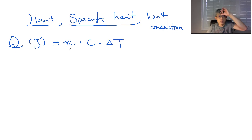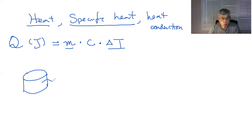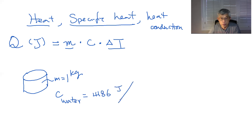So what it says is if I know the mass, I know the temperature increment, and I know the specific heat, then I can calculate how much heat is required to increase that amount of temperature for that mass. So let's say if I have some water here, and the mass m is equal to 1 kilogram. And C for water, specific heat for water, is equal to 4186 joule per kilogram per degree C.